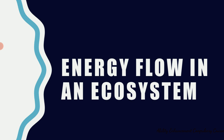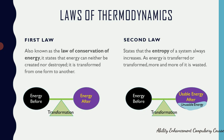Whenever we talk about energy, we have to keep in mind the laws of thermodynamics. In biology, the two major laws of thermodynamics that are important are the first two. The first law of thermodynamics says that energy can neither be created nor destroyed — it just transforms or moves from one form to another. This is also called the law of conservation of energy. A simple example is the conversion of solar energy from the sun, by the process of photosynthesis, into chemical energy in the form of food present in plants.